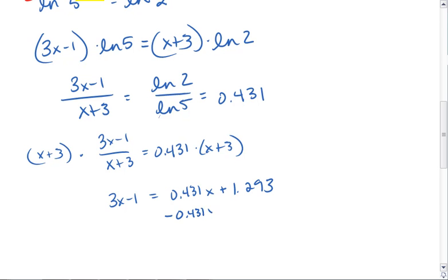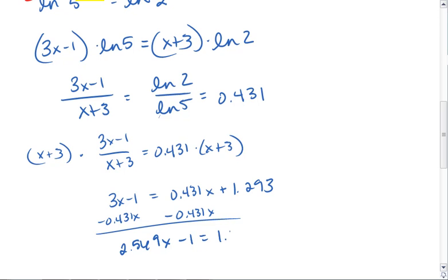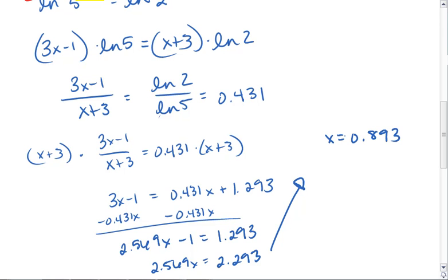Subtract 0.431x from both sides. 1.3 minus 0.431 gives me approximately 2.569. I can add one to both sides. I get 2.569x equals 2.293, thus x equals 2.293 divided by 2.569, and I get x equals approximately 0.893.